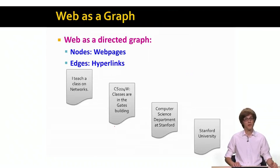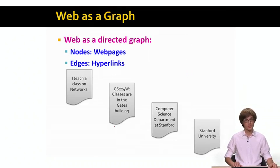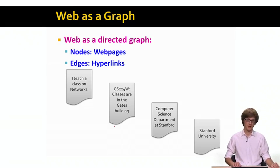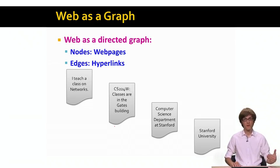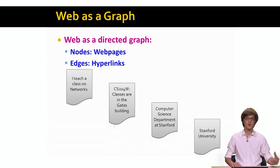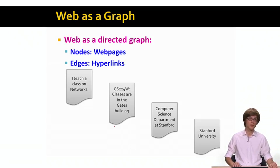Another big example of networks is the web itself, which can be represented as a graph. Today we will focus on the structure of the web graph and develop methods that allow us to learn something about the pages on the web. The first question is: how do we represent the web as a graph? We will represent the web as a directed graph.